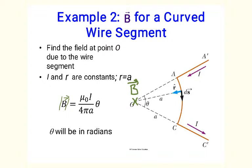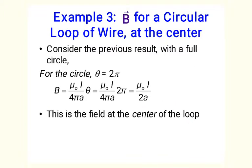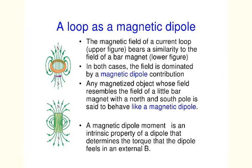Using the previous example, we can easily calculate the magnetic field at the center of a circular loop of wire. For this case, we take theta equals 2 pi. The 2 pi in the numerator cancels with the 4 pi in the denominator, and the full field equals mu_0 times I divided by 2a. This is the field at the center of the loop, exactly in the plane of the loop.